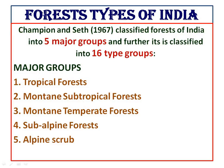Now, an important topic from which one or two questions are expected in exams — forest types of India. The forest types of India were given by Champion and Seth in 1967. This is very important — kindly note that the forest types of India were given by Champion and Seth in 1967. There are five major groups, and it is further classified into 16 type groups.